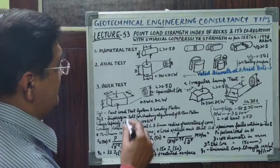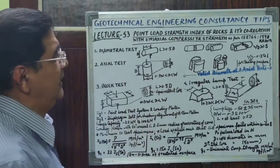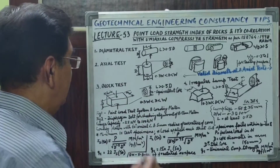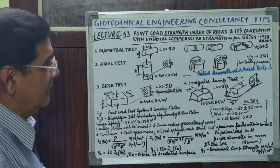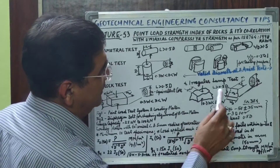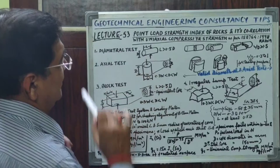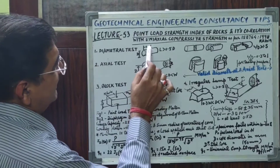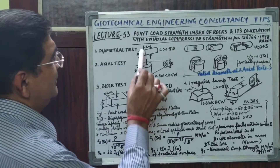In the diametral test, the load is applied along the diameter. In the axial test, the load is applied axially. In the block test, we finish the rock core in the form of a block, or if that's not possible we test it on an irregular-shaped core sample. This figure shows the diameter of the core and the point where the test is performed; the distance L from the tip must necessarily be greater than 0.5D in all four cases.